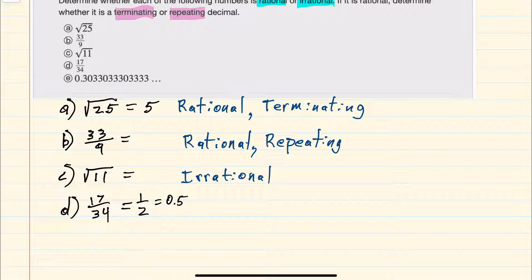Being able to write it as an integer over an integer means that this example is rational, and since I can write it as 0.5, it is also terminating.